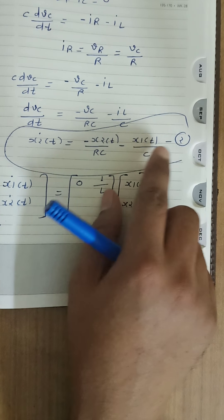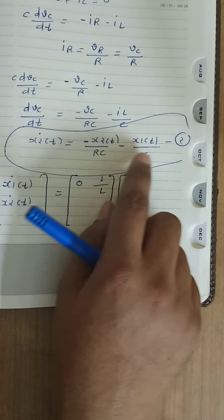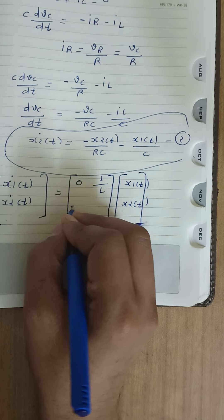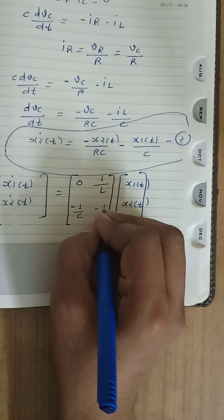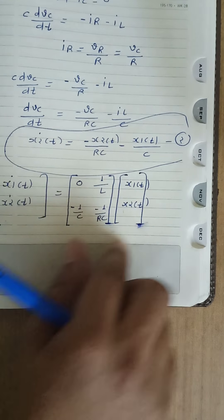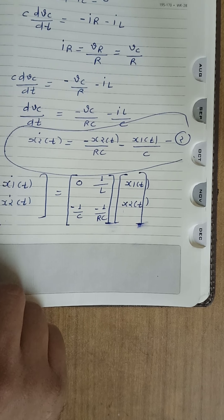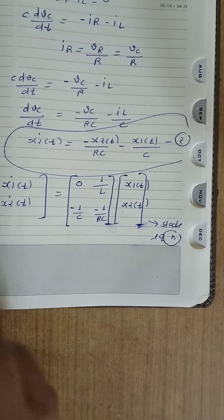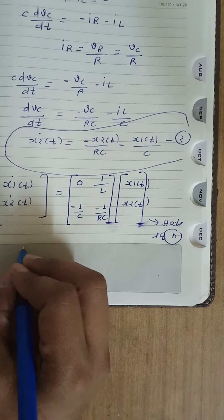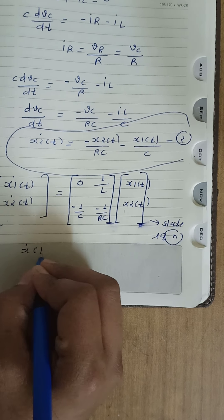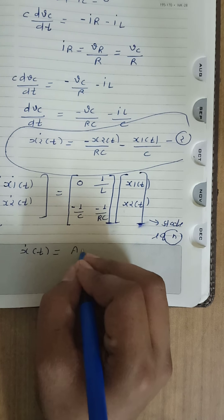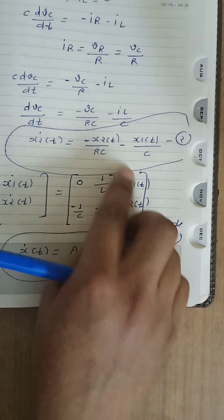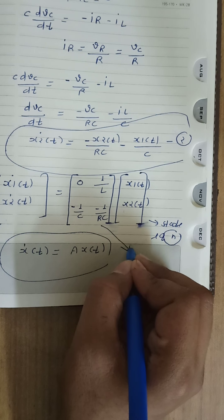From the second equation, the coefficient of x1 is minus 1 by C and the coefficient of x2 is minus 1 by RC. So in the second row, the first element becomes minus 1 by C and the second element becomes minus 1 by RC. This is my single matrix state equation, which is of the form x dot(t) equal to A·x(t). This matrix defines the value of matrix A.